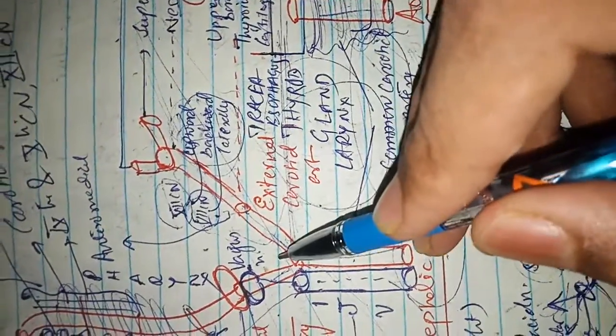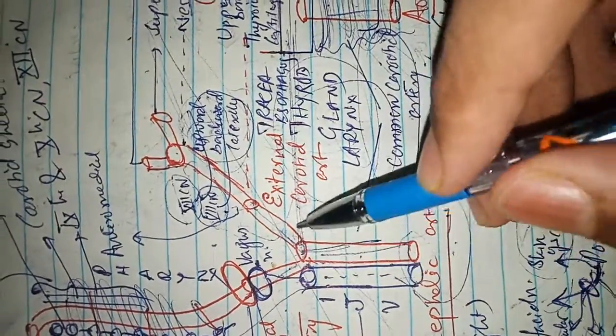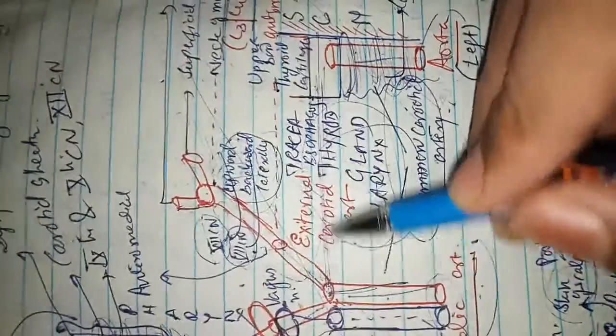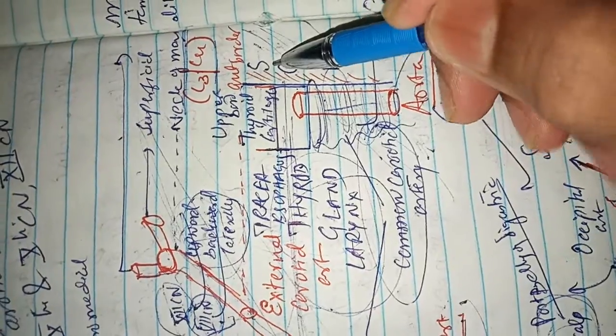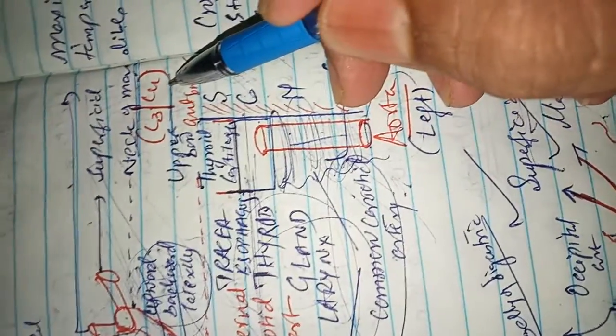In the neck, it divides into the external and internal carotid artery at the level of the upper border of the thyroid cartilage, this is C3 and C4 vertebra.